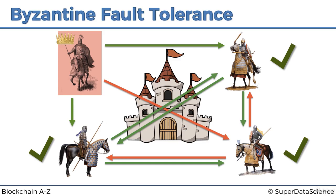How does this relate back to blockchain or other decentralized systems? In a blockchain, somebody might try to attack the system and we need to come up with a consensus protocol — like these generals did — which will allow us to protect the system from traitors or attackers. We want to make the system as tolerant as possible, not just to one attacker but to as many as possible. That's the whole concept of Byzantine fault tolerance.